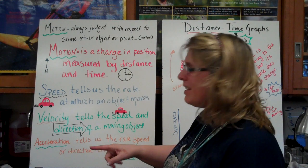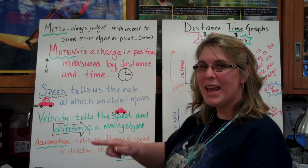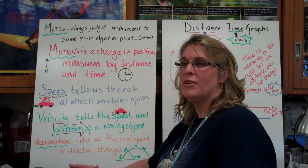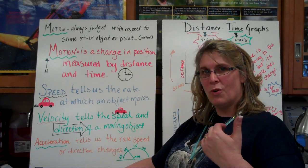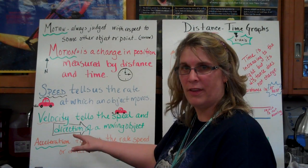When we look at velocity, that's a little bit of a different concept. Velocity tells us the speed that it's going and the direction it's going. Whether it's forwards, backwards, north, south, east, west, left or right. That's when you're looking at velocity, so it's a directional thing.